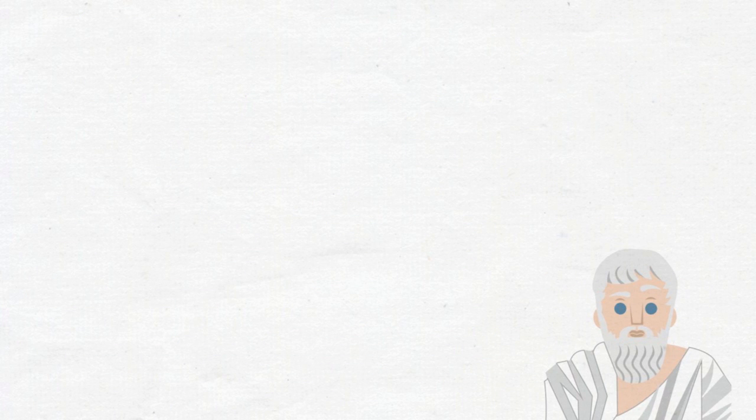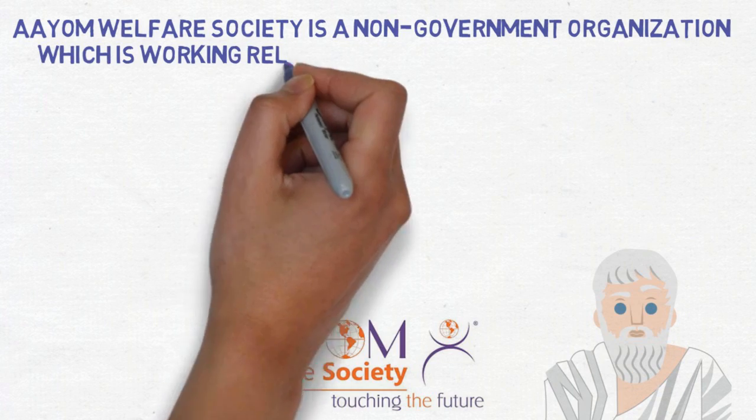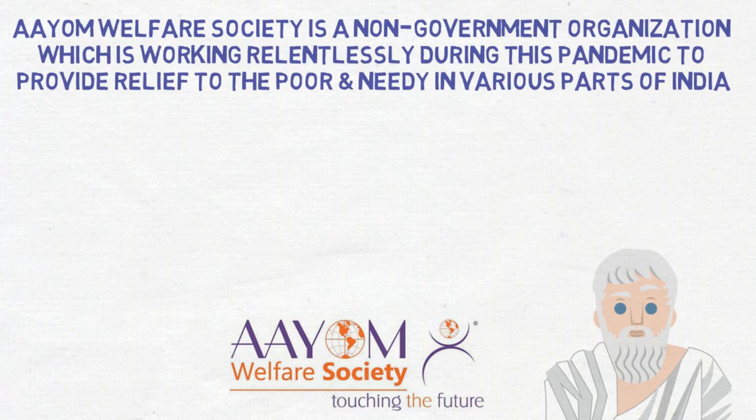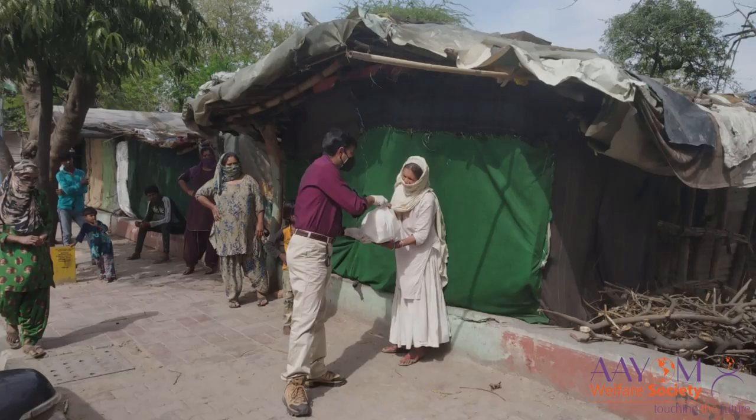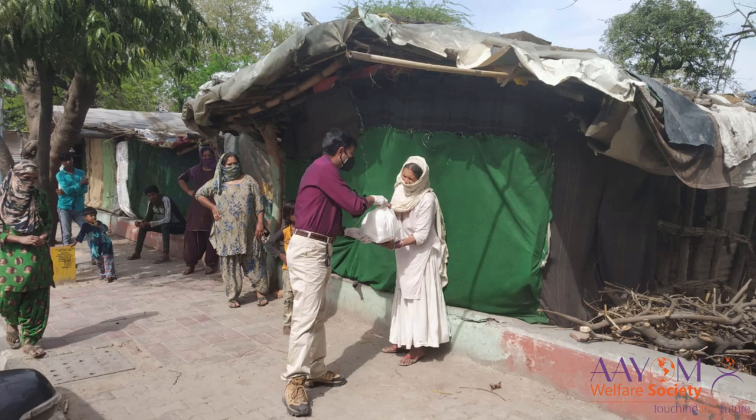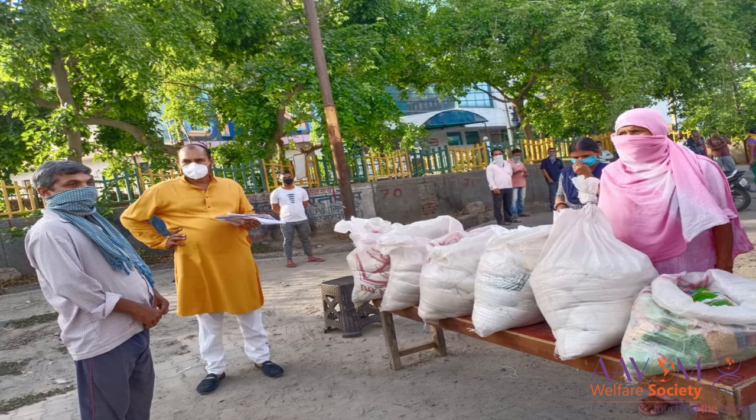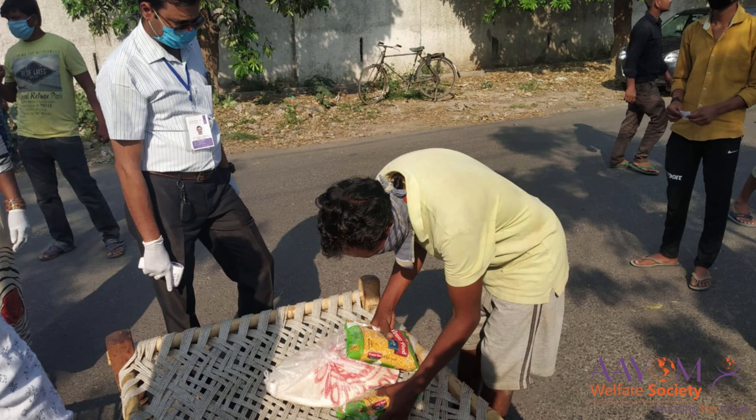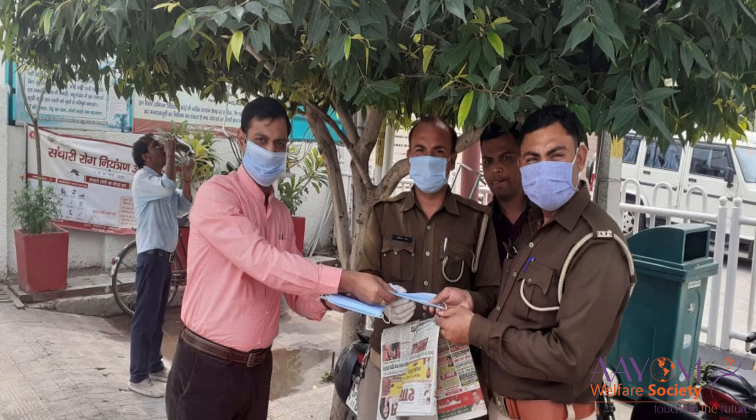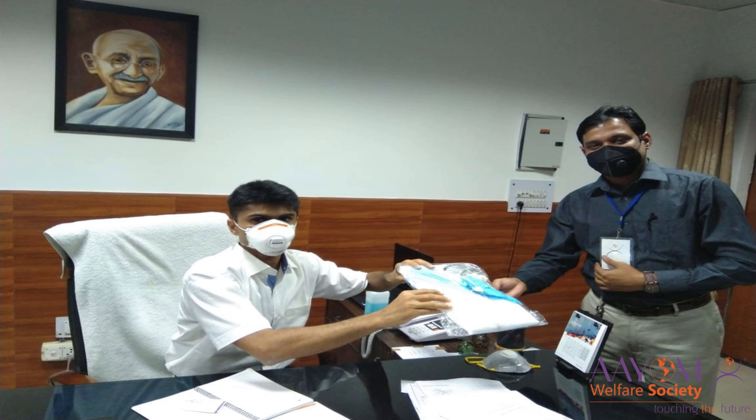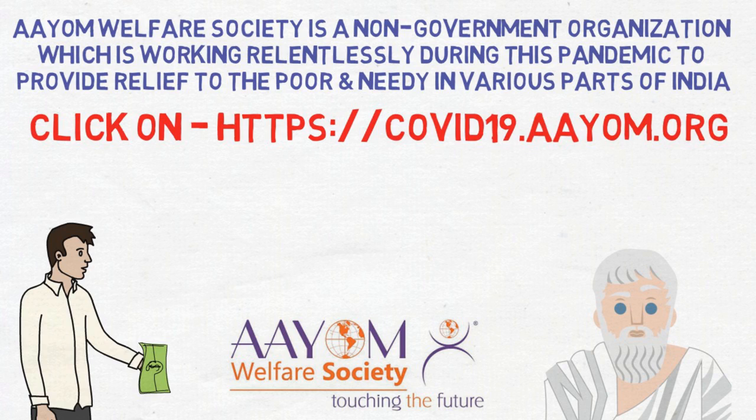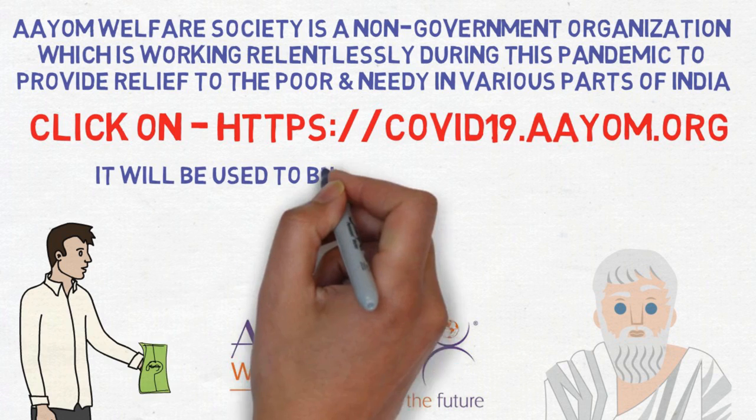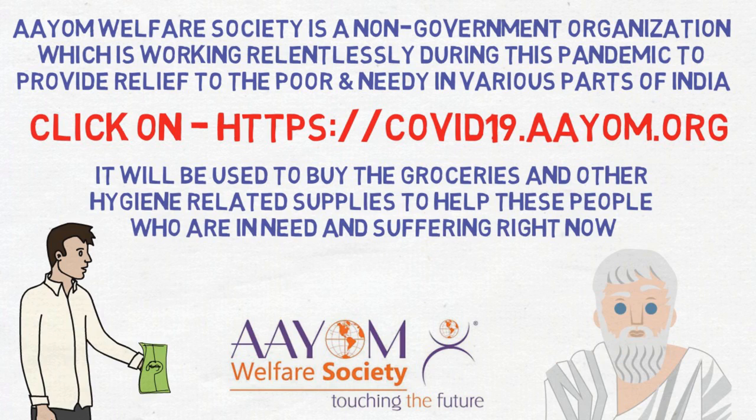With this video, we have also been given the opportunity to help people who are suffering because of this ongoing pandemic. We have partnered with the Aayom Welfare Society. Aayom Welfare Society is a non-governmental organization which is working relentlessly during the pandemic to provide relief to the poor and needy in various parts of India. They are doing this by distributing groceries, masks and sanitizers to the families of migrant laborers, domestic helpers, drivers and many other daily workers who are left with no money and no means to earn their daily bread or buy sanitizing products or masks to protect themselves from the virus. All because of the lockdown. This organization is also utilizing funds to support the government, administration and hospitals by providing PPE kits, infrared thermometers and sanitizers for all doctors and nurses. So if you would like to contribute, please click on the link in the description. We at Philosophies for Life and the Aayom Welfare Society are incredibly grateful for however much you wish to donate because we know it is going to be used to buy the groceries and hygiene related supplies to help those people who are in need and suffering right now. Thanks for any support you can offer.